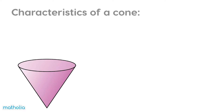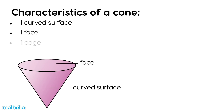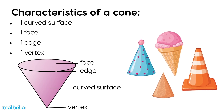What are the characteristics of a cone? It has one curved surface, one face, one edge, and one vertex. These are some of the different types of cone-shaped objects.